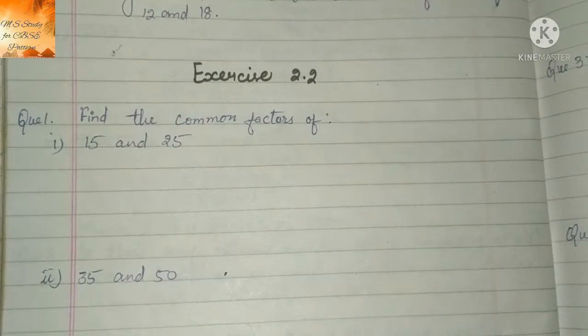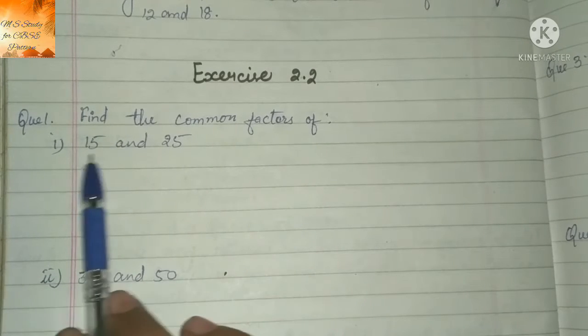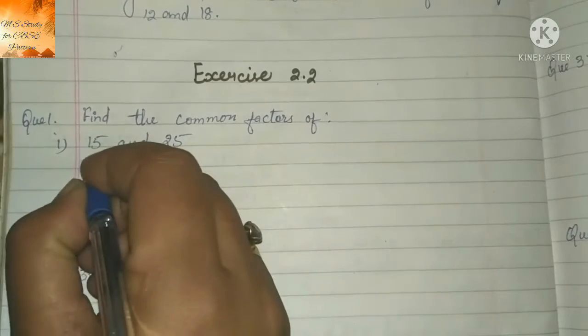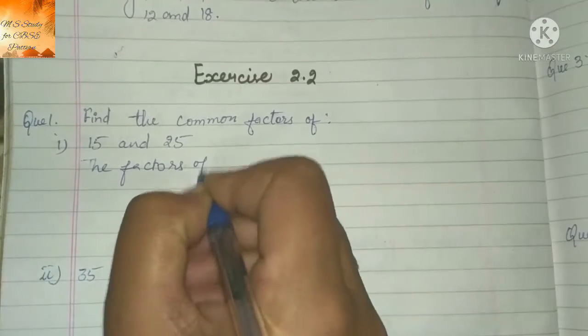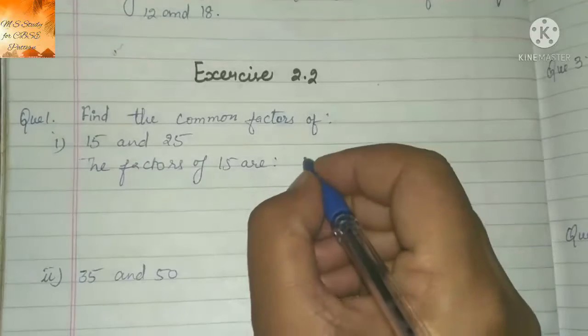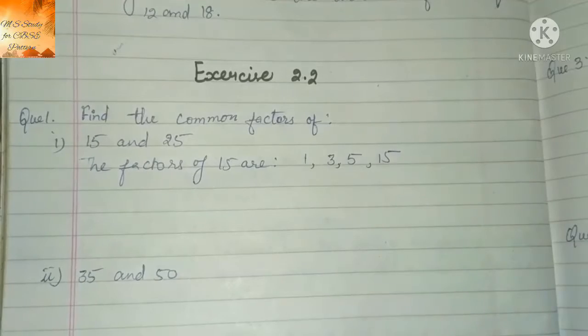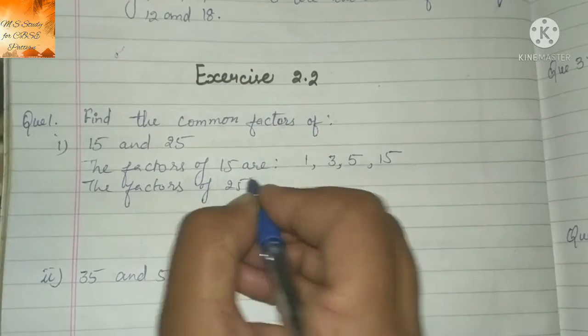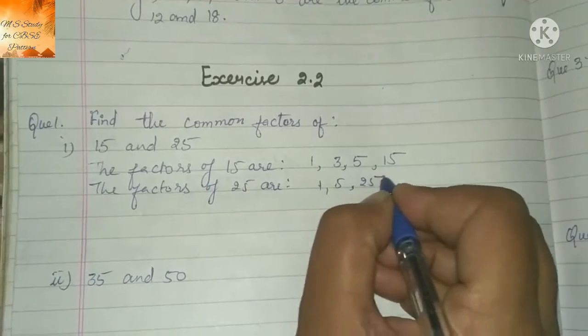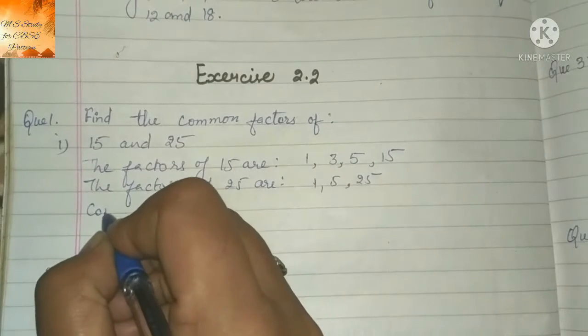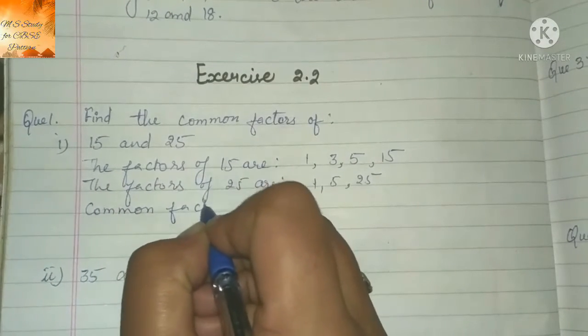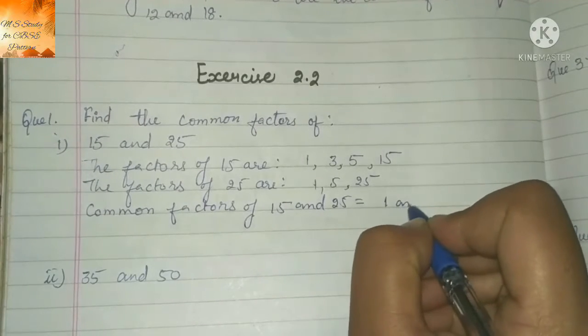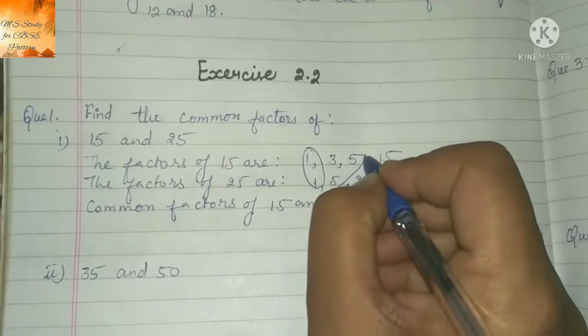Now we will solve exercise 2.2. Question number 1 is find the common factors of 15 and 25. The factors of 15 are 1, 3, 5 and 15. The factors of 25 are 1, 5 and 25. So common factors of 15 and 25 equals 1 and 5.